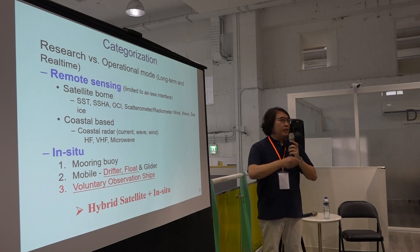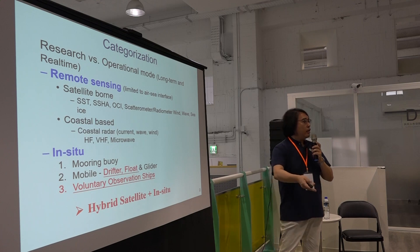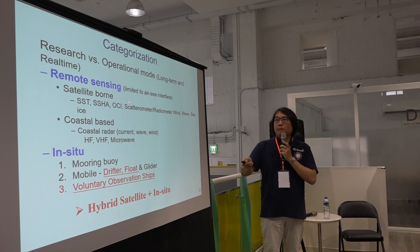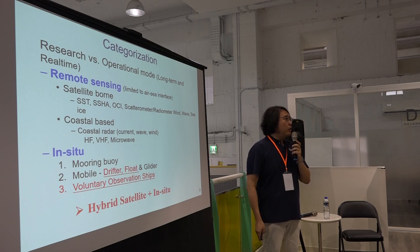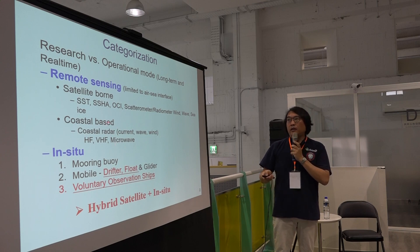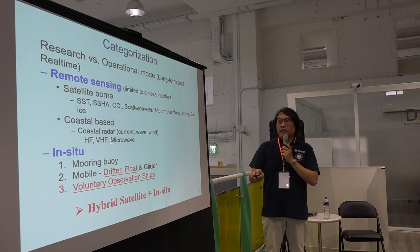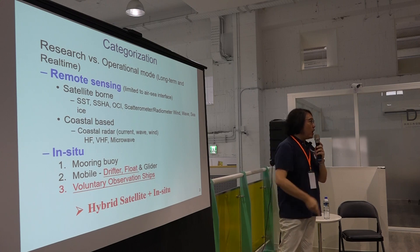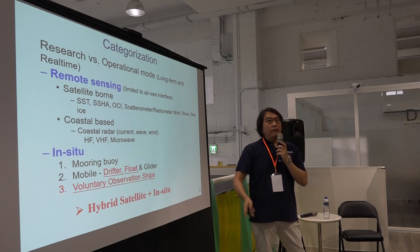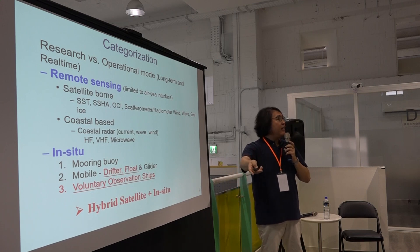Operational monitoring can be categorized as remote sensing and in-situ measurement. In-situ means on-site, where the instrument is on the water surface. Remote sensing can be further categorized as satellite-borne — measuring surface wind, sea surface temperature, ocean color, wave, and sea ice — and coastal-based, like HF or VHF radar in Japan or Taiwan that covers the area extending to the EEZ zone.